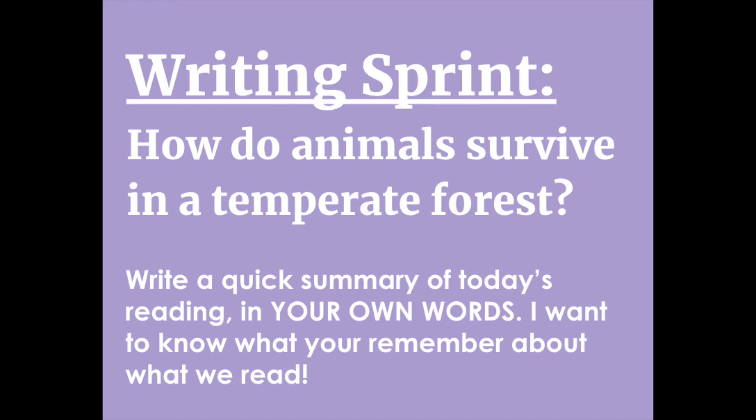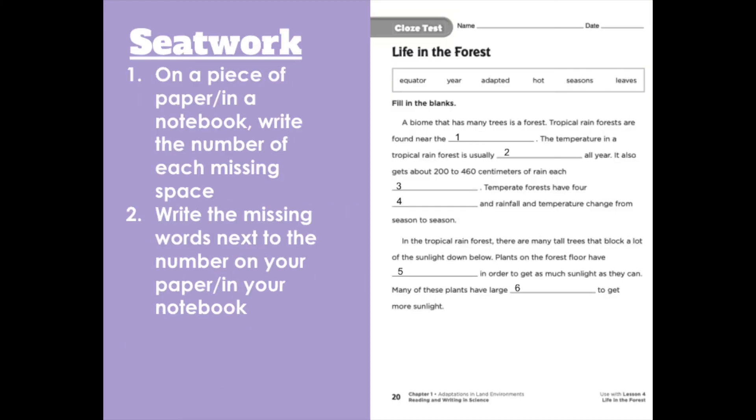On a piece of paper or in your notebook, you're going to be completing today's writing sprint to answer the question: how do animals survive in a temperate forest? Write a quick summary of today's reading in your own words — I want to know what you remember about what we've read. Now onto seat work: write the number of each missing space, then write the missing words next to the number on your paper or in your notebook. Seat work was our final task for today. See you tomorrow.